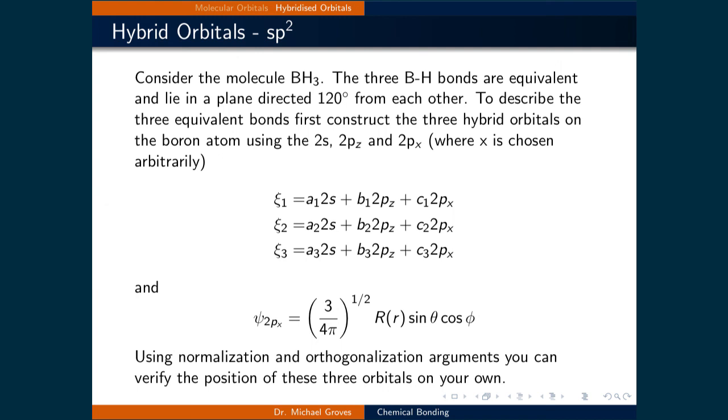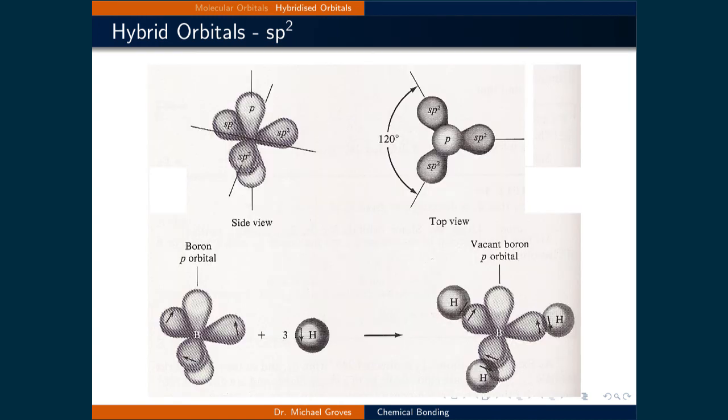We choose 2PX instead of 2PY because we'll arbitrarily let the molecule lie along the XZ plane. The three hybridized orbitals are then constructed as linear combinations of the three atomic orbitals. We will use normalization and orthogonalization to verify that the angle between these three orbitals are 120 degrees in a class activity. Here is an image of the BH3 molecule showing the SP2 hybridized orbitals as well as the vacant PY orbital.